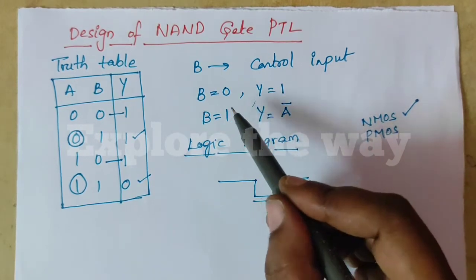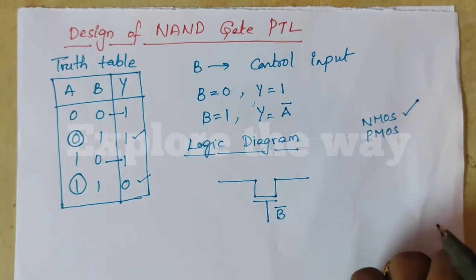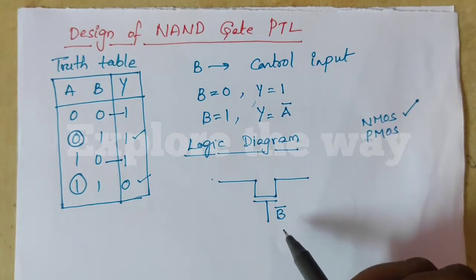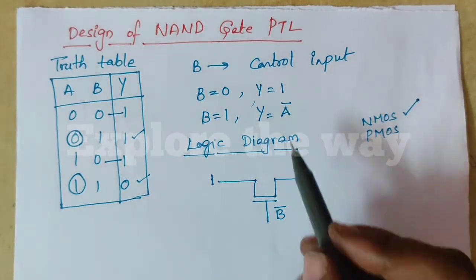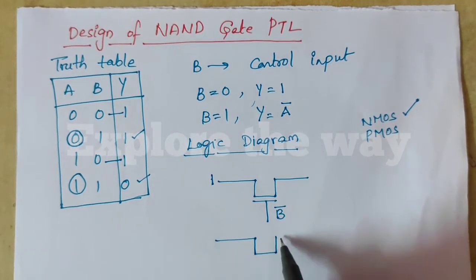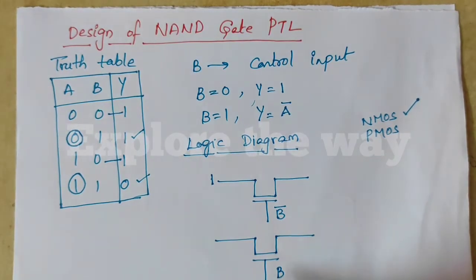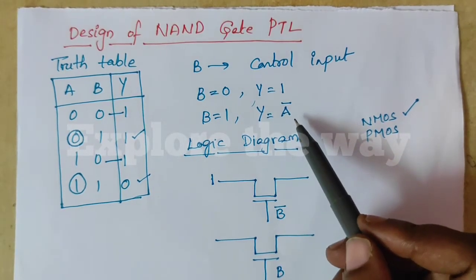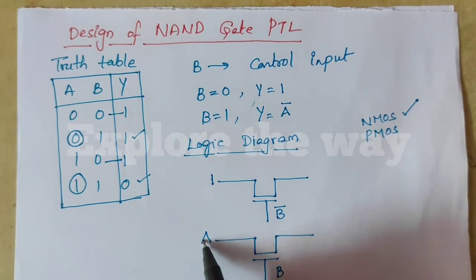A pass transistor passes its input to the output when the device is active. So here the input is 1. For the second equation, when B equals 1, the control input is B. What is the output? A bar. So the input is A bar.